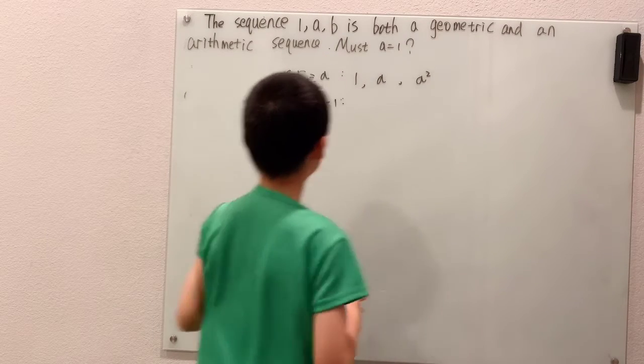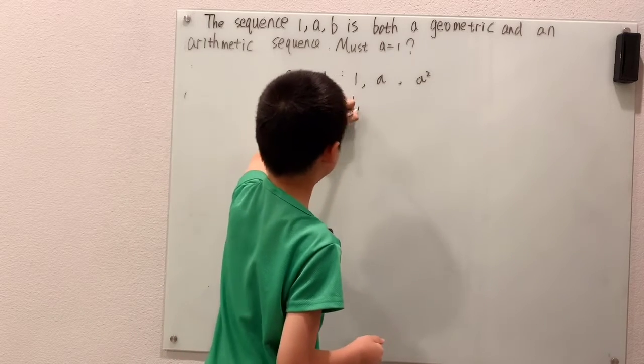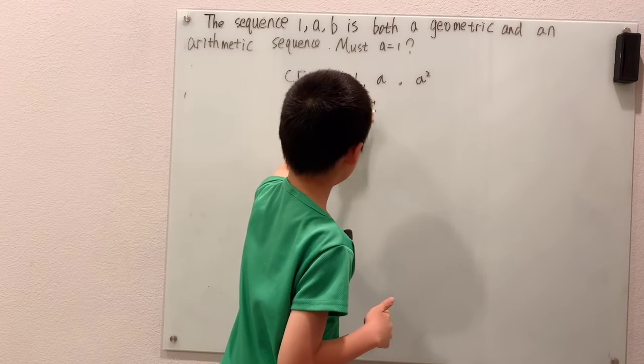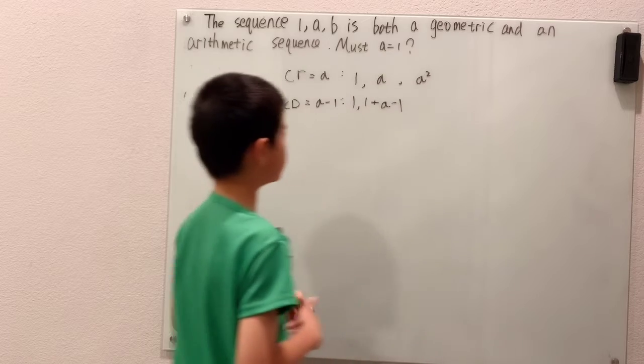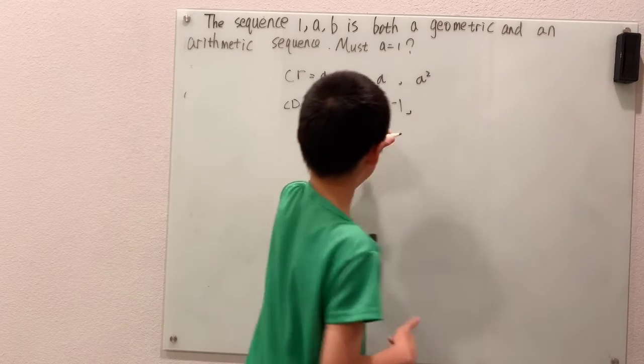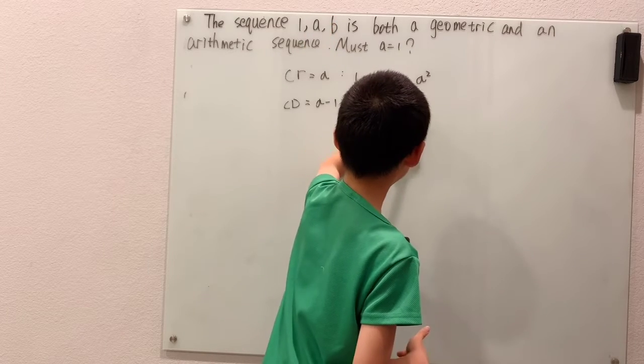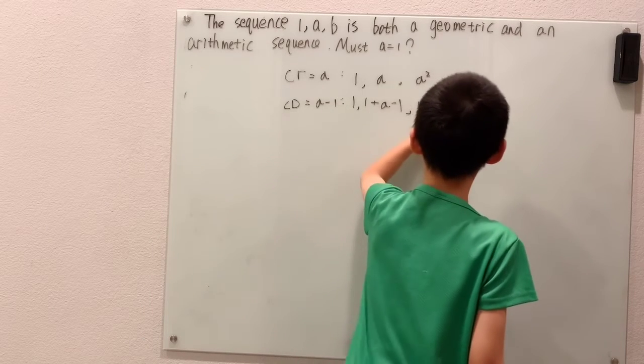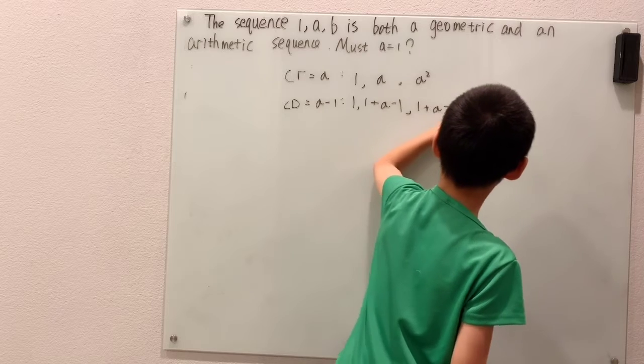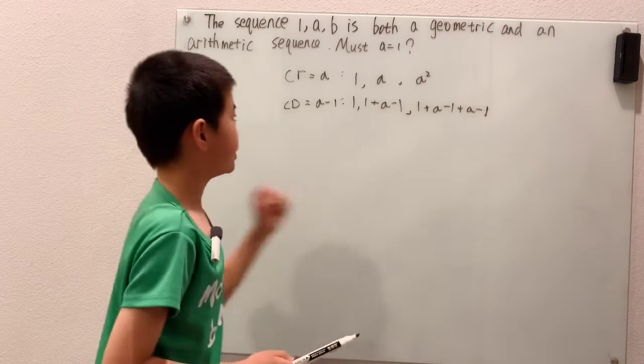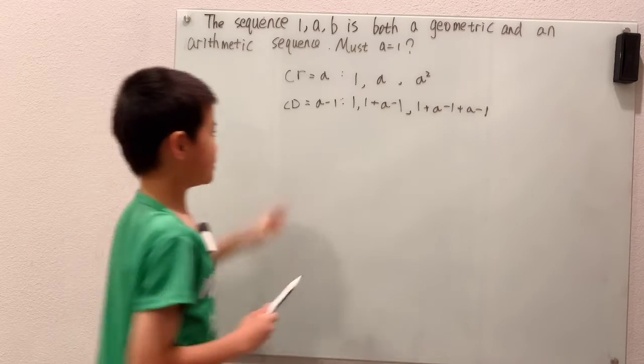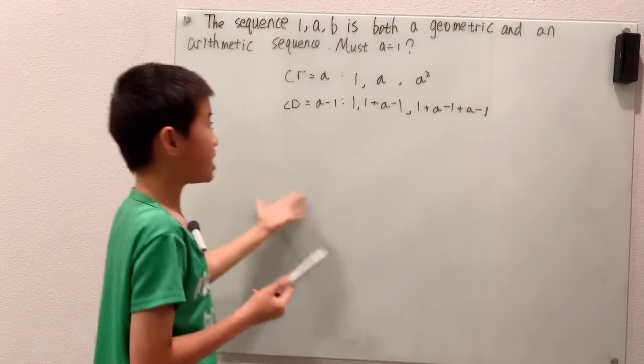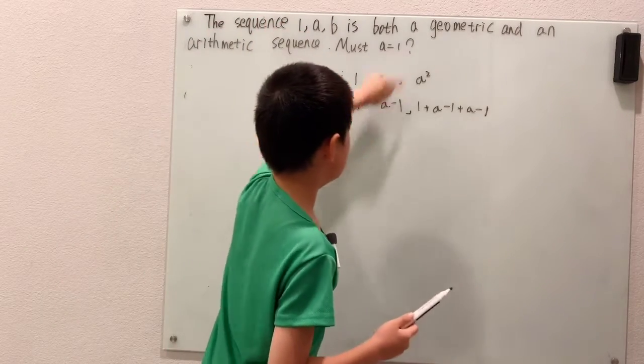The sequence still starts with one. We just add on that common difference, which is 1 plus a minus 1, which equals a. And B is 1 plus a minus 1, and you add on that common difference again, plus a minus 1. Now this first part, one and one, that means if this is like 1, a, B, it won't change, which means these terms, all these terms, they have to be equal.